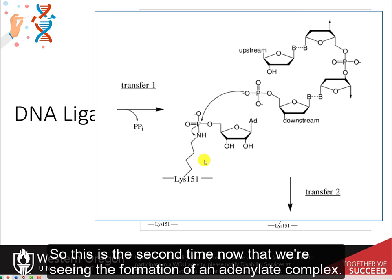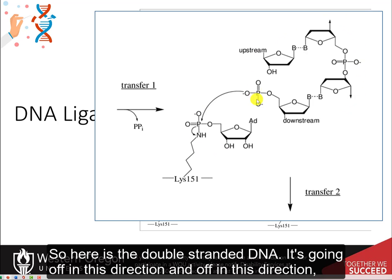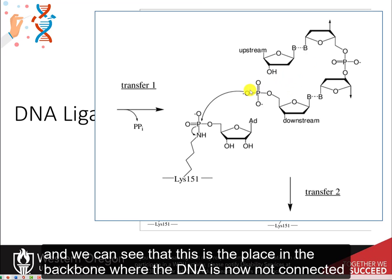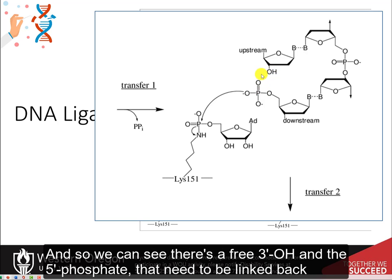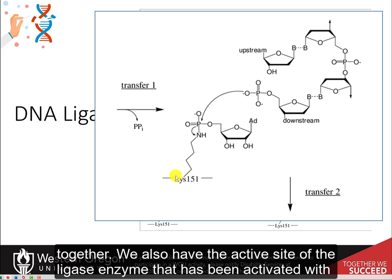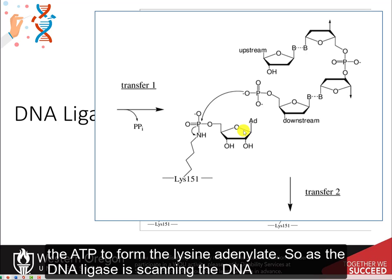This is the second time now that we're seeing the formation of an adenylate complex. Here is the double-stranded DNA going off in both directions, and we can see that this is the place in the backbone where the DNA is not connected. There is a free 3' hydroxyl and the 5' phosphate that need to be linked back together. The active site of the ligase enzyme has been activated with the ATP to form the lysine adenylate.